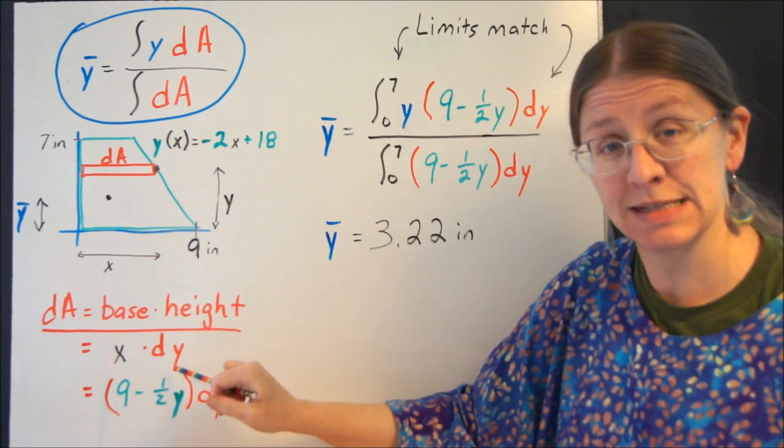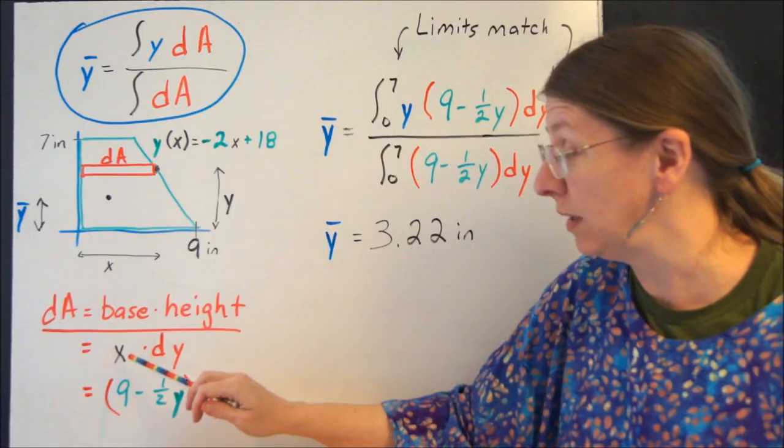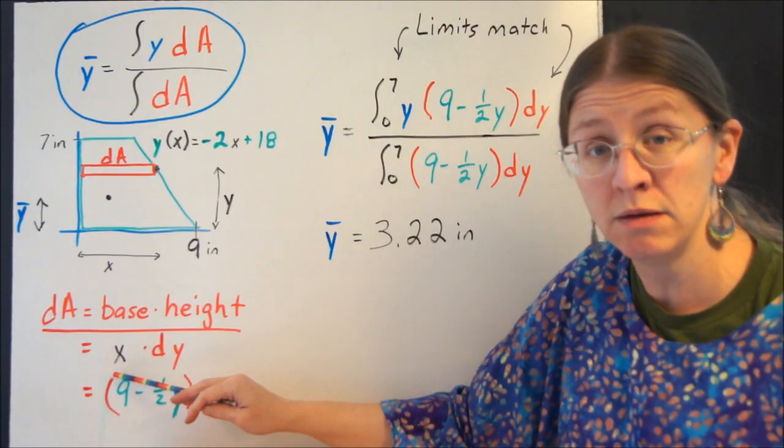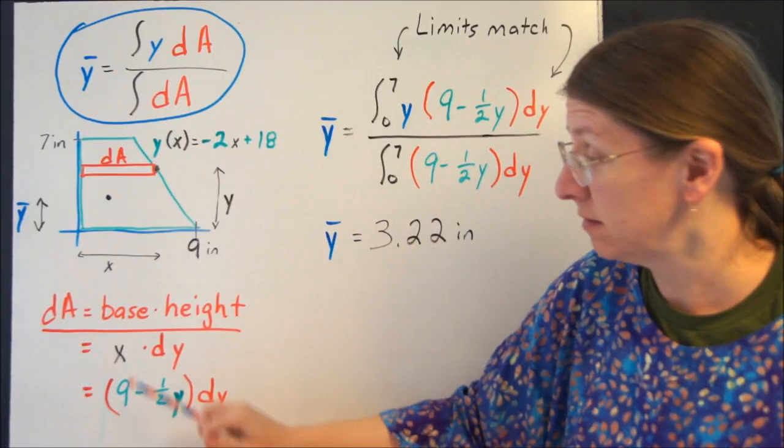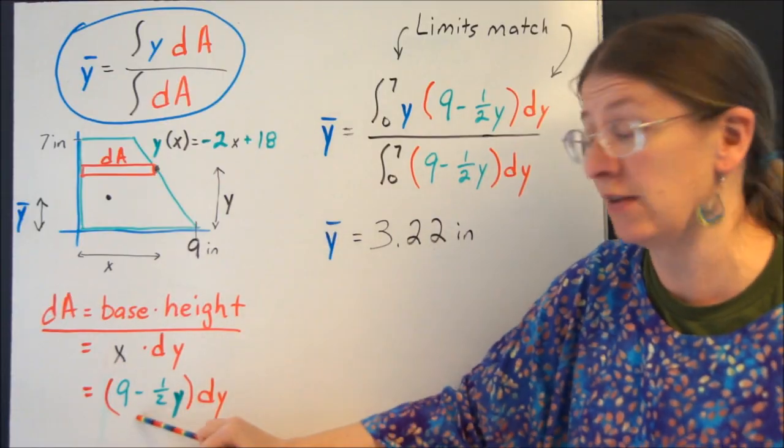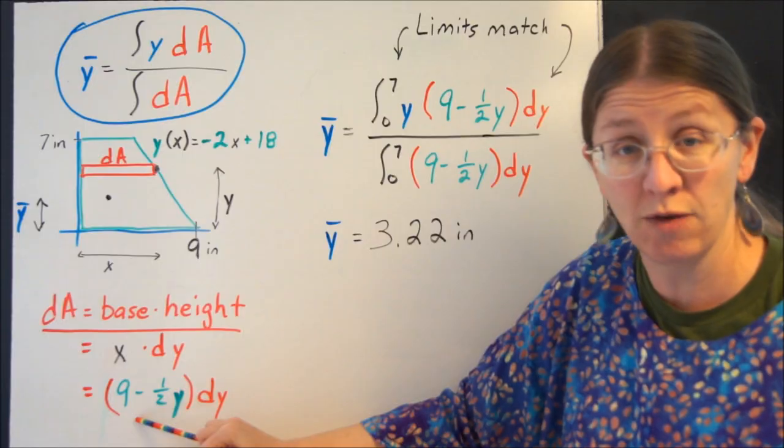So if my base is x, I'm integrating dy. I really wish that this were in terms of y. So I can solve this equation for x. Substitute that in there. If you look at this equation, this gives you x equals 9 minus 1/2 y.